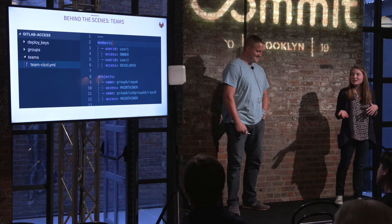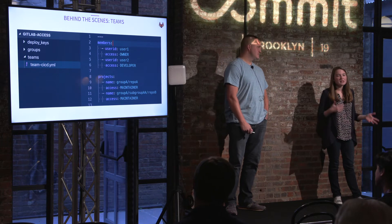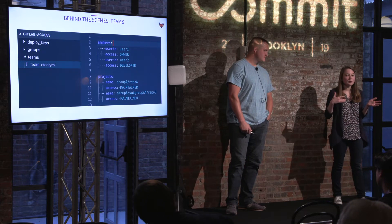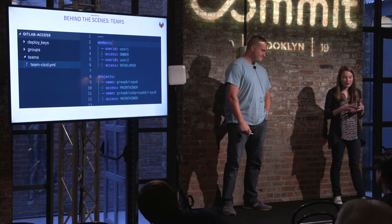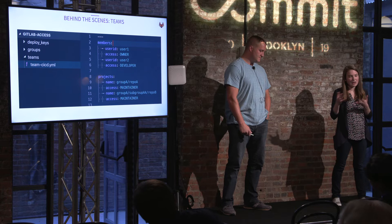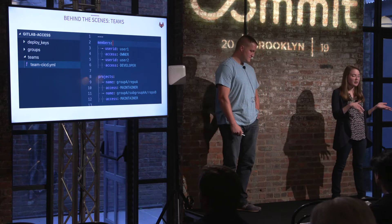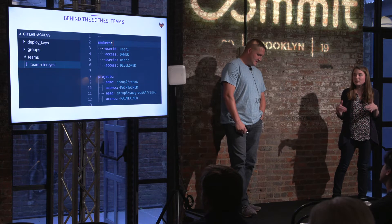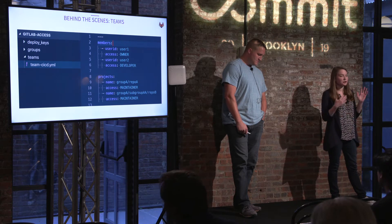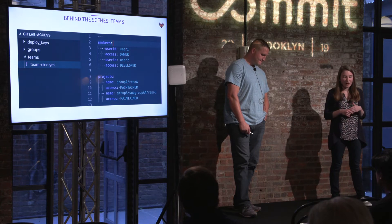We also had the need for a concept called teams. A team is basically just a group in GitLab that has members but no projects. We needed this because application teams wanted to give people outside their area access to just four repositories in their group. In our repository we have a teams folder; the naming convention requires the YAML file to start with 'team-' and then the team name. Here we're creating a team called CICD — the YAML has user IDs and their access level, plus the projects they should have access to and at what level. The pipeline does linting, creates the team if it doesn't exist, updates users, creates projects if they don't exist, and updates permissions.